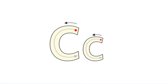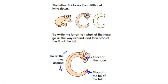The big C and the little C have the same shape, but the size is different. Today I am going to teach how to write the letter C — capital C and the little C. To find the shape of letter C, it looks like a little cat lying down. To write the letter C, start at the nose, go all the way round, and then stop at the tip of the tail.